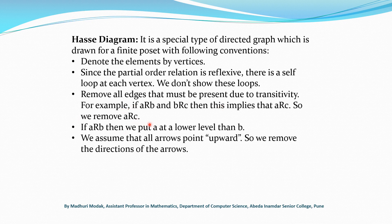By joining A to B and B to C, it follows that A is related to C, so it is not necessary to draw a line segment from A to C separately. If A is related to B, then A is placed at a lower level and B at an upper level. We assume all arrows point upward, so we remove the directions of the arrows.